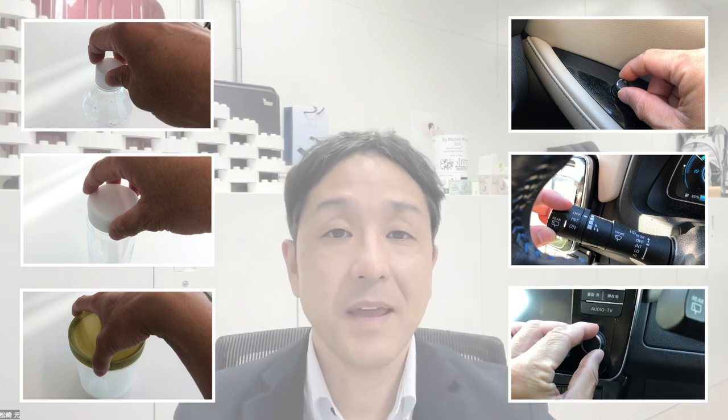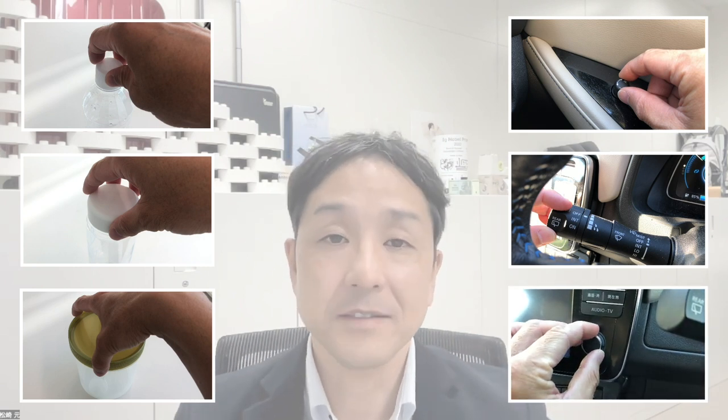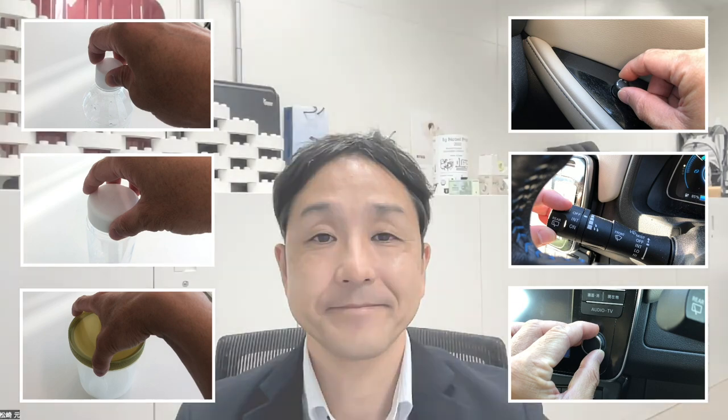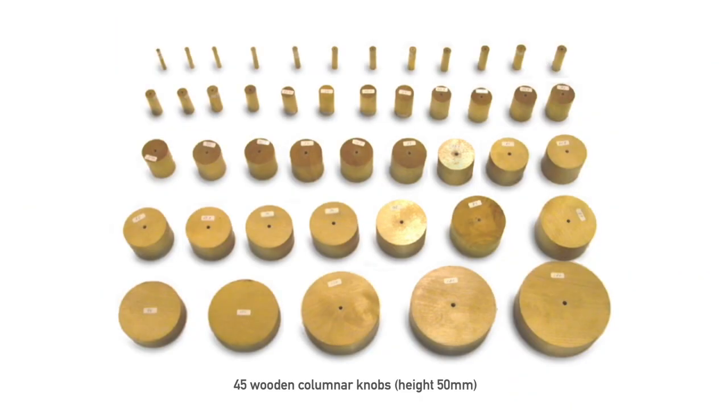Now let me explain the method of the experiment. First, we prepared 45 wooden columnar objects of different diameters. These were supposed to be knobs, handles, caps, etc.